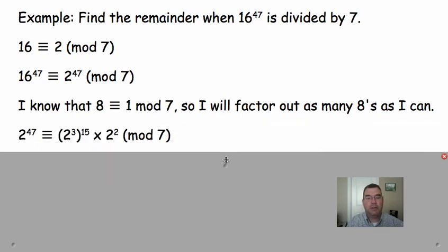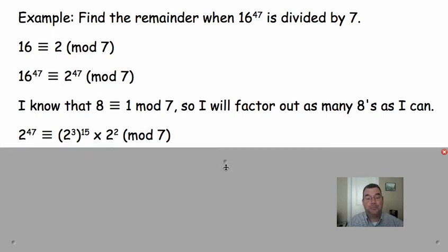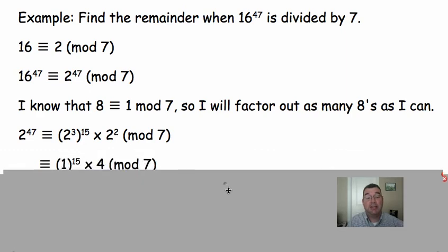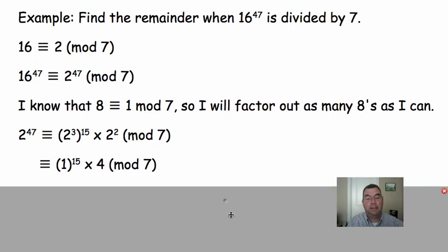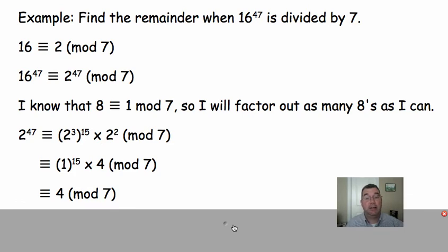So, if I think of 2 to the 47, I can take out 15 2 to the thirds and then I'll be left with a 2 to the second. And so as I said, each of those 2 to the thirds is 8 and 8 is the same thing or it's congruent to 1 mod 7. So, instead of 8 to the 15, I've got 1 to the 15. And 2 to the second is just 4. Well, a bunch of 1s times 4 is 4. So, believe it or not, if I took 16 to the 47 and divided it by 7, I would have 4 as my remainder. So, that's just one example of how to use properties of modular arithmetic to make a seemingly challenging problem simpler.